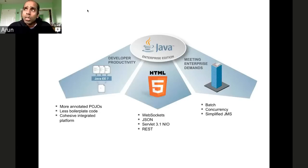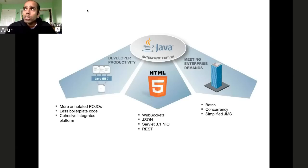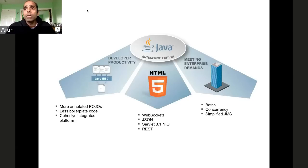The last theme for Java EE 7 was meeting enterprise demands by adding two new specifications. One is for standard batch processing, which used to be called Spring Batch, and now there is a standard way of doing it. There is also the ability to spin up new threads that can run in the user context. The JMS specification, heavily used for machine-to-machine messaging, is extremely simplified.